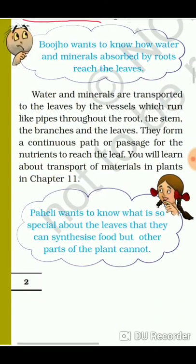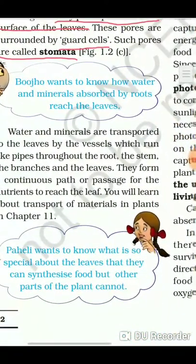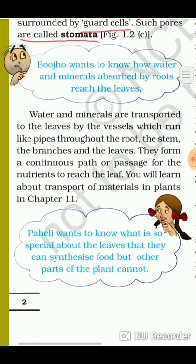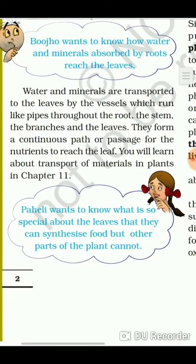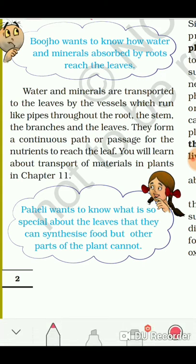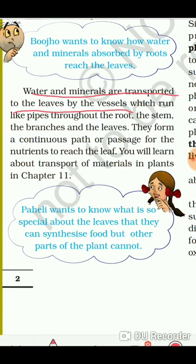Water and minerals are transported to the leaves by vessels which run like pipes throughout the root, stems, branches, and leaves, forming a continuous path to reach the leaf. Although not mentioned in the book, I am telling you additionally — the name of these vessels are xylem and phloem, which you will learn about in next classes.